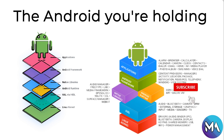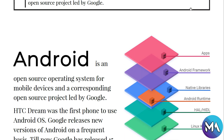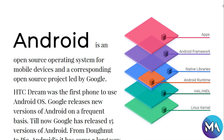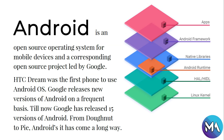As mentioned before, Android is based on Linux, and Linux is open source. So Android is an open source operating system for mobile devices, and it is a corresponding open source project led by Google. Looking back at the layers diagram from the previous lesson, we know that Android is an open source operating system for mobile, led by Google.